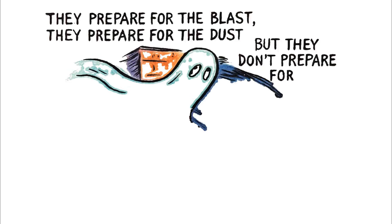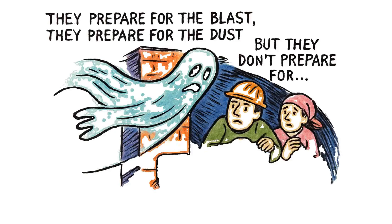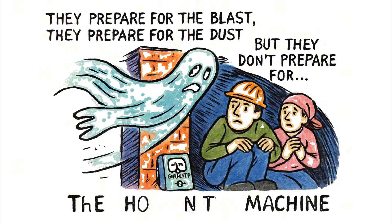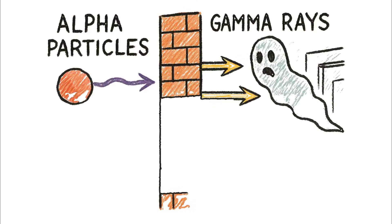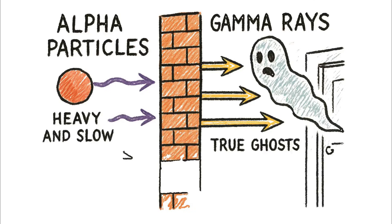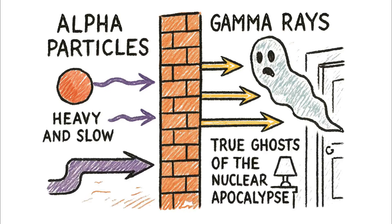They prepare for the blast, they prepare for the dust, but they don't prepare for the ghost in the machine that passes through their defenses. While alpha particles are heavy and slow, gamma rays are the true ghosts of the nuclear apocalypse, capable of passing through your walls as if they weren't even there.